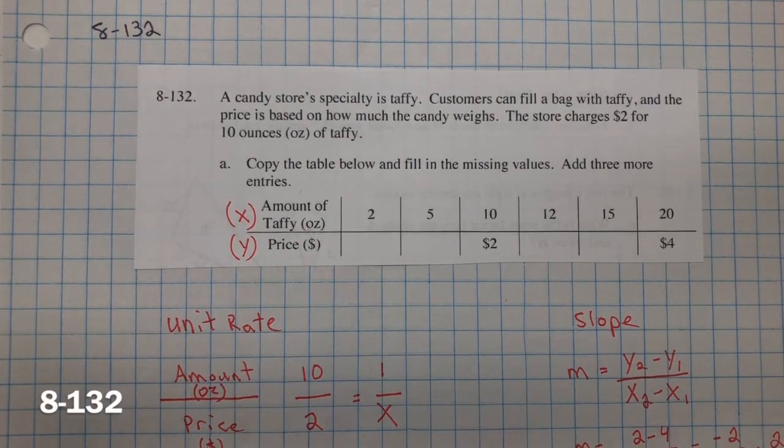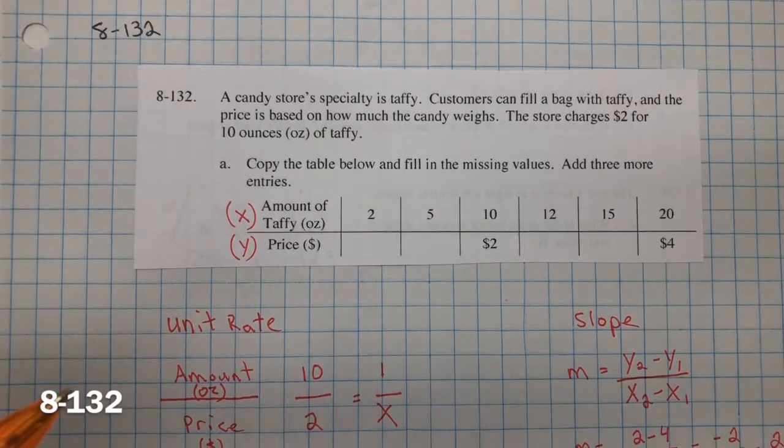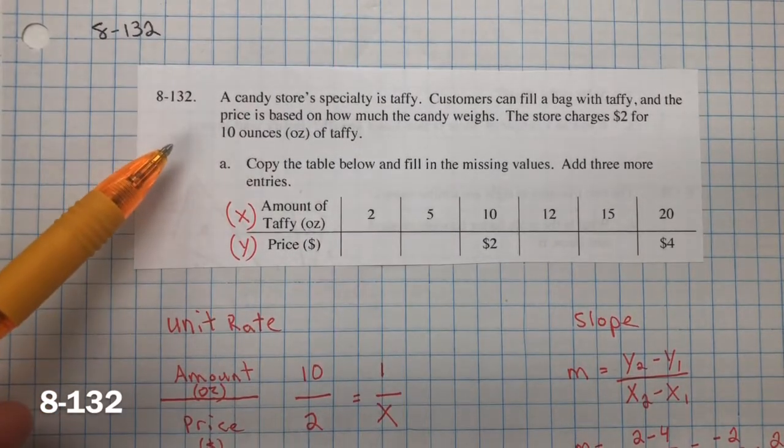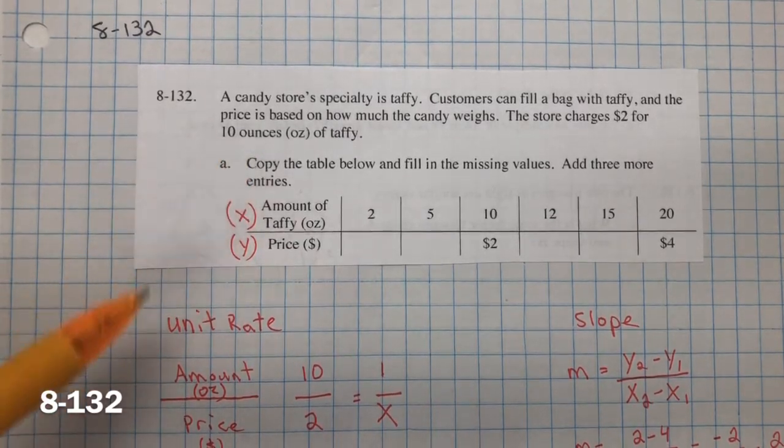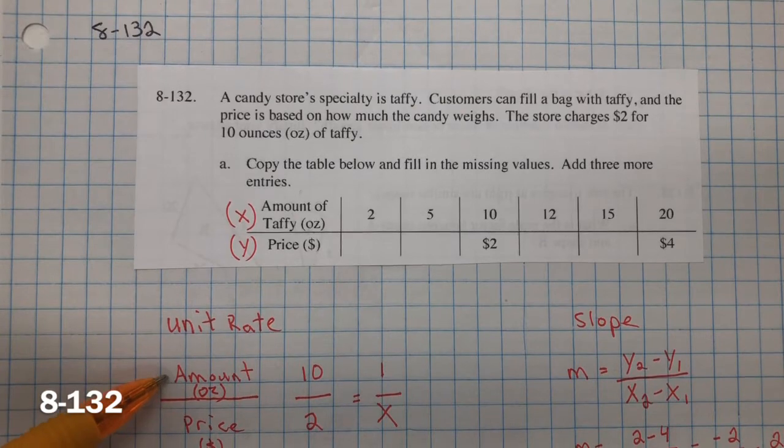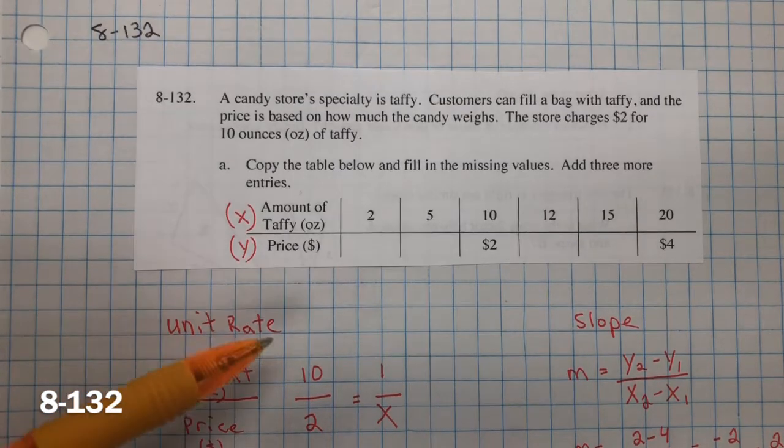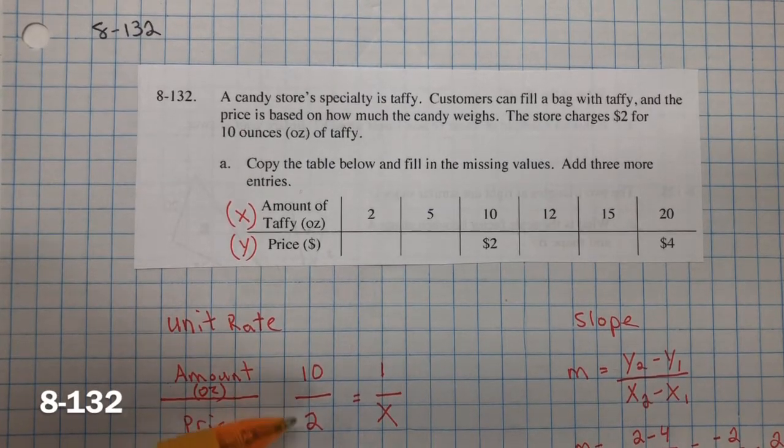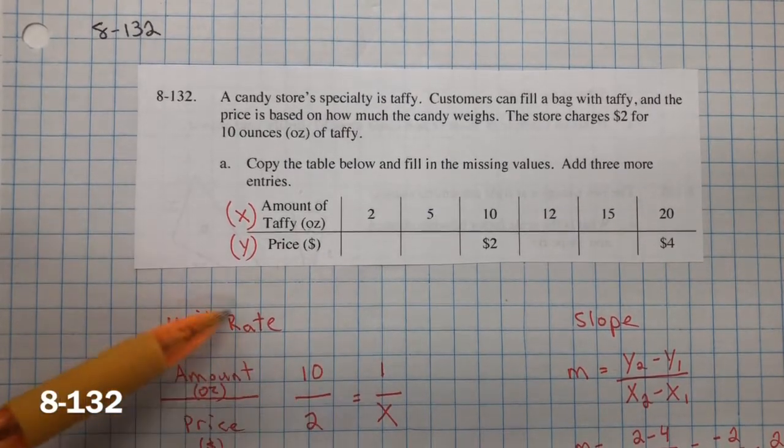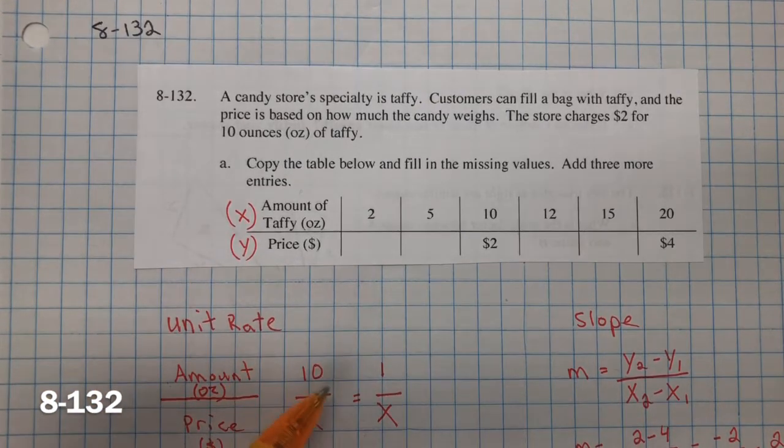For problem 132, a candy store's specialty is taffy. Customers can fill a bag with taffy, and the price is based on how much the candy weighs. The store charges $2 for 10 ounces of taffy. So you have the amount of taffy is the dependent, and the independent is the price. So we have 10 ounces cost $2, so we want to find the unit rate. One ounce would cost how much? And we cross-multiply.